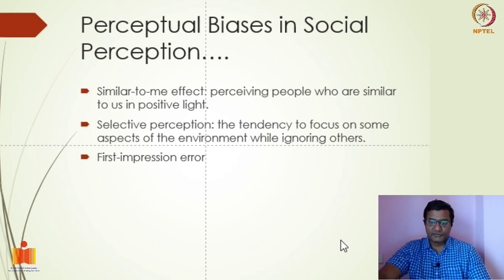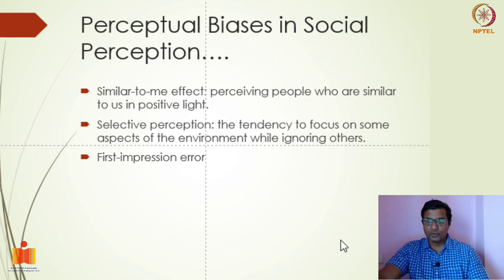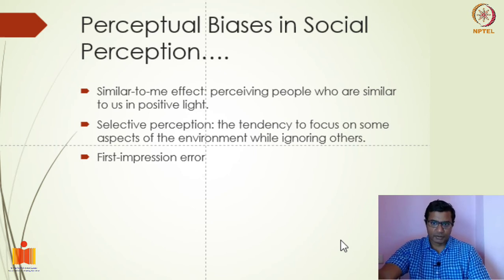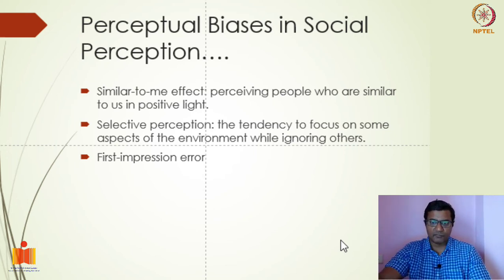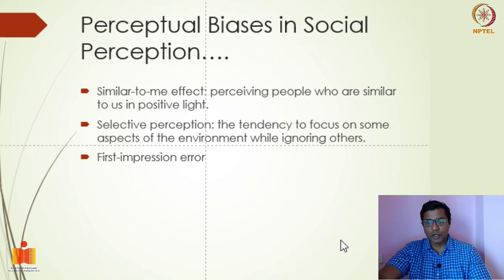Selective perception means when we receive a lot of information, we choose only certain information and ignore others — unconsciously. We get a lot of information in our day-to-day life, but we select only fewer pieces of information to make decisions. Sometimes the information we have not selected or ignored can be very important information, but we think it may not be useful. This is selective perception bias.